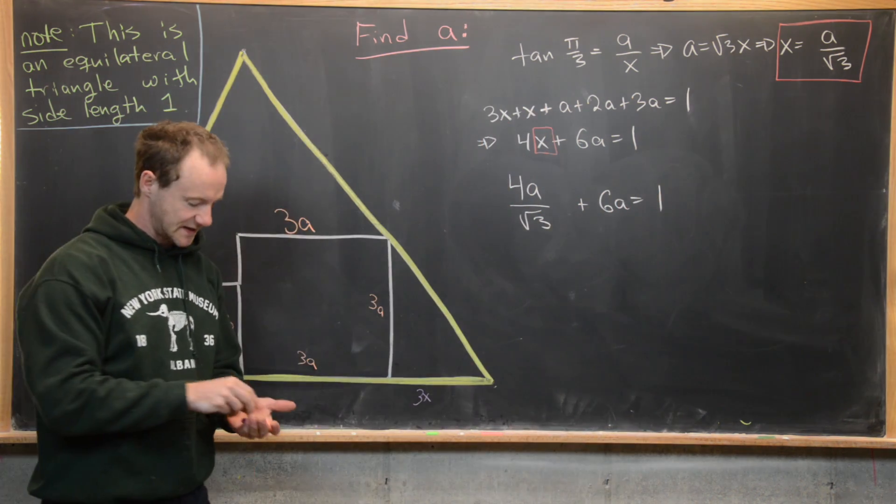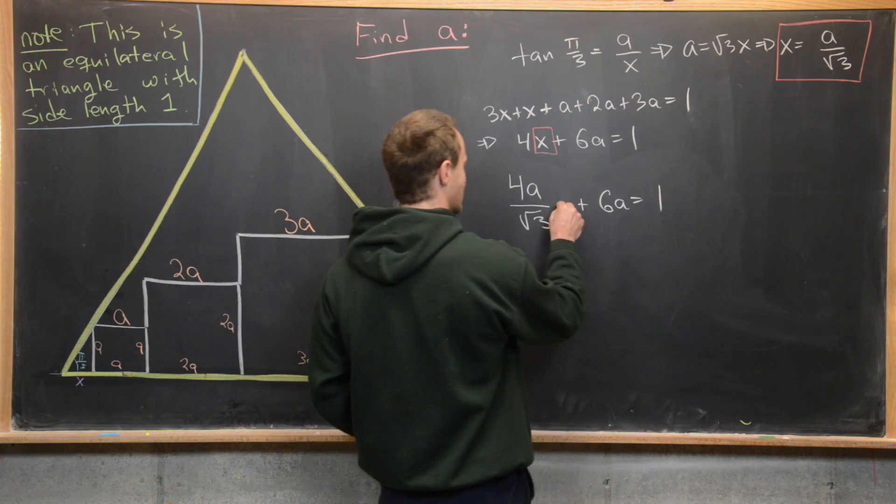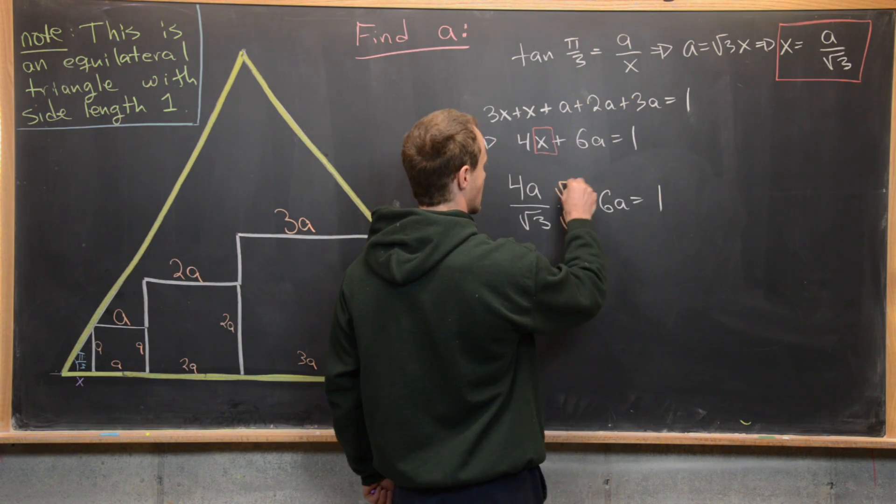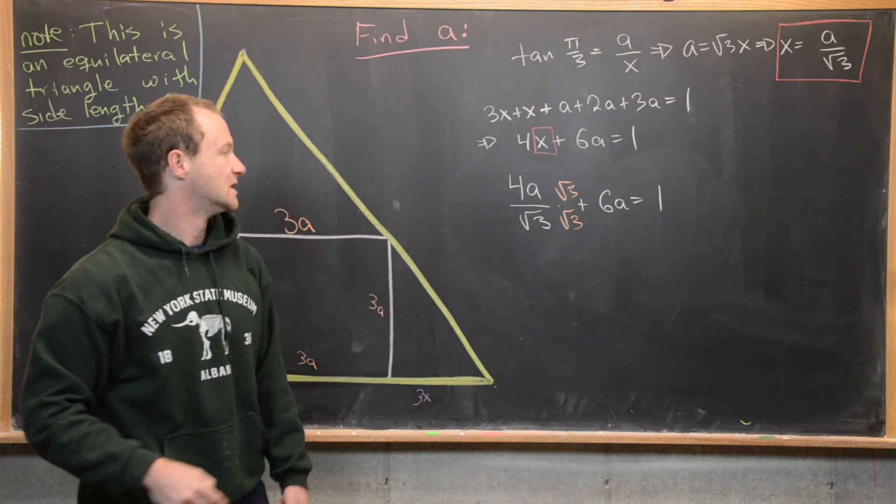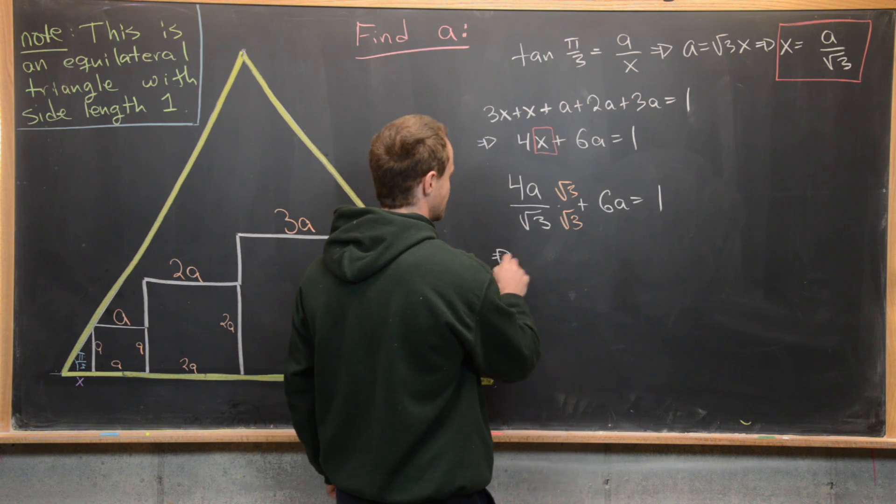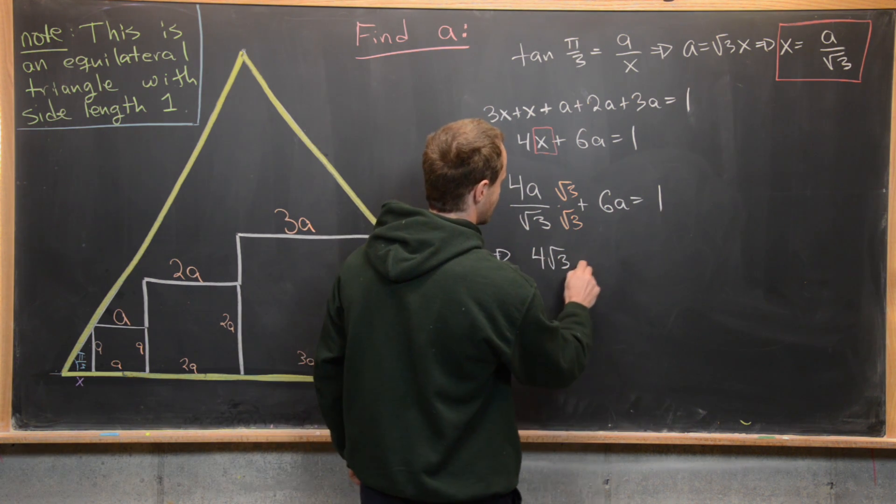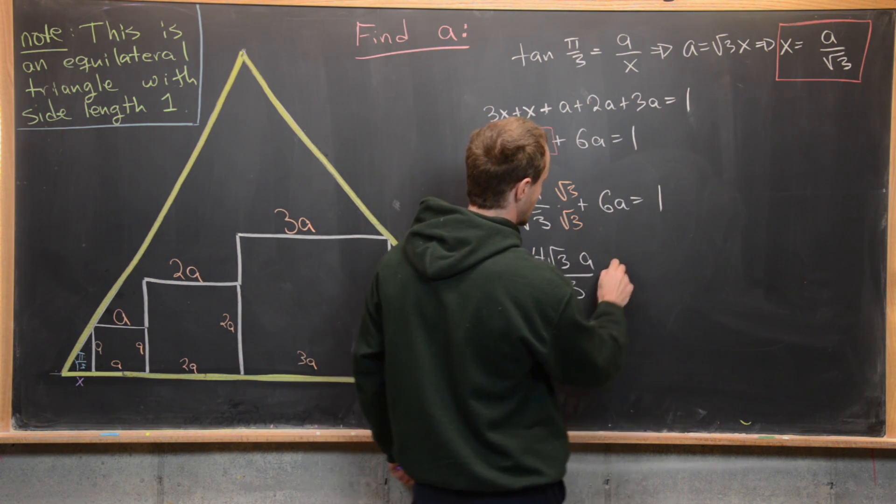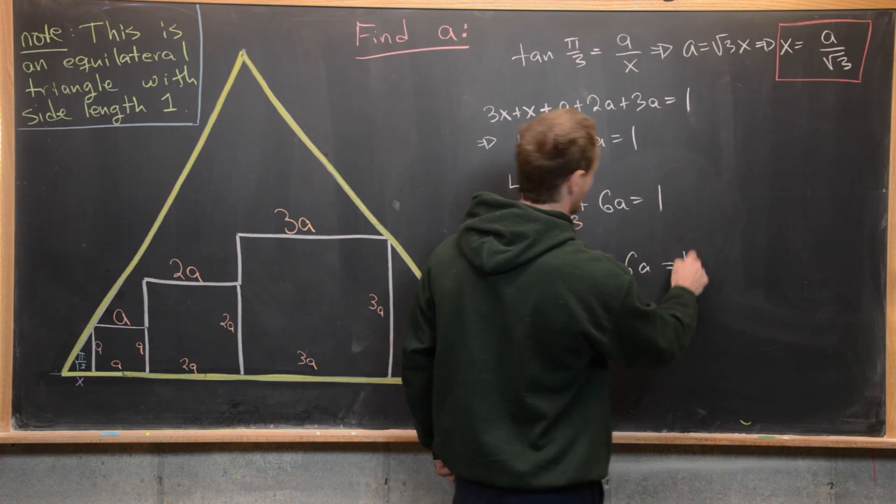Let's go ahead and rationalize the denominator here so we can do that by multiplying this by the square root of 3 over the square root of 3. So that's going to give us 4 times the square root of 3a over 3 plus 6a equals 1.